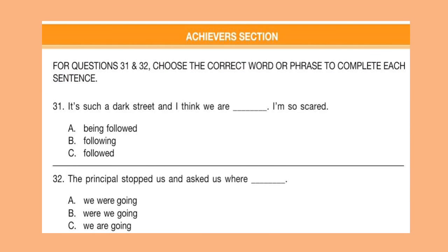Here comes the Achievers Section. For questions 31 and 32, choose the correct word or phrase to complete each sentence. Question 31: It's such a dark street and I think we are dash. I am so scared. Question 32: The principal stopped us and asked us where dash. Look at the options and choose your answer.